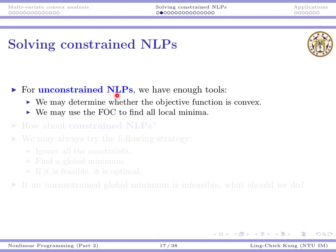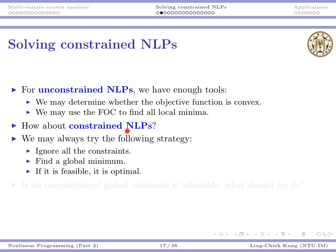Suppose I have unconstrained nonlinear programs, then we know how to do it. We know we may show the objective function is convex or not. And if it is convex, first order condition becomes sufficient. Or if it is non-convex, first order condition can still find all the local minima. And then we may do comparison. And that means as long as we are patient enough, we can still find the global minima. But if we have constrained nonlinear programs, what should we do?